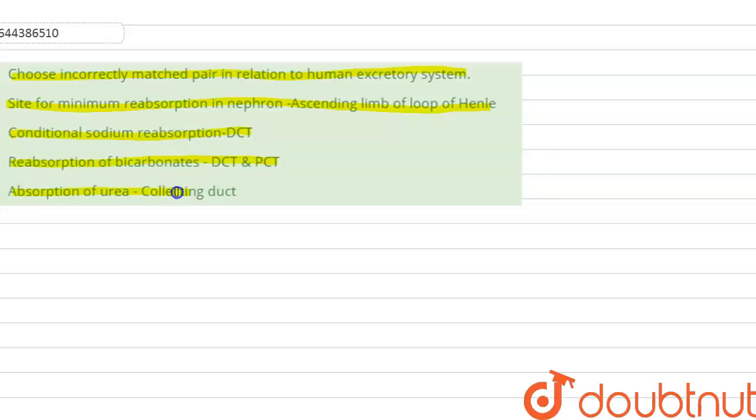Absorption of urea: collecting duct. Let's continue with the statement and answer. First, site for minimum reabsorption in nephron.